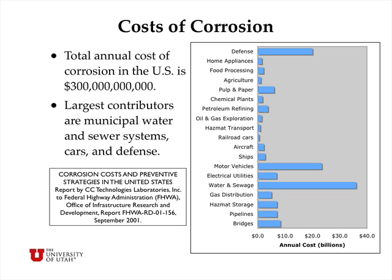There are many contributors to this cost. The largest turns out to be the pipelines that carry water and sewage in our municipal systems in cities and towns. The second largest is motor vehicles, which rust and need to be replaced. The third largest source of cost is the Defense Department, which has an enormous amount of iron and steel equipment that sits in the rain most of the time. Then there are bridges, pipelines, aircraft, oil refining and exploration equipment, electrical utilities, ships — all sorts of things that undergo corrosion and are very expensive to repair.